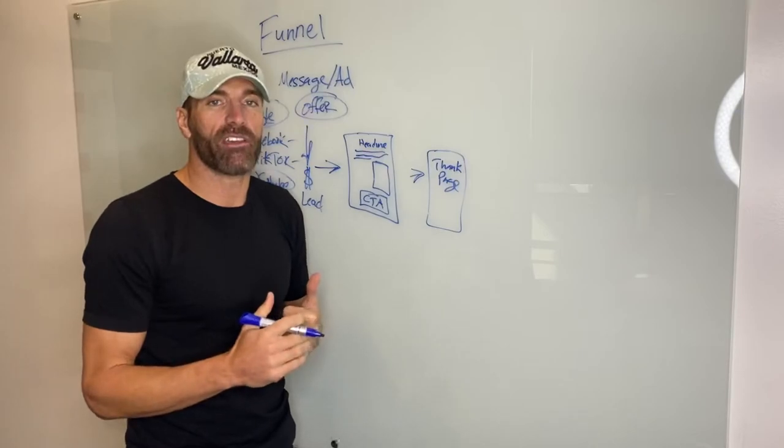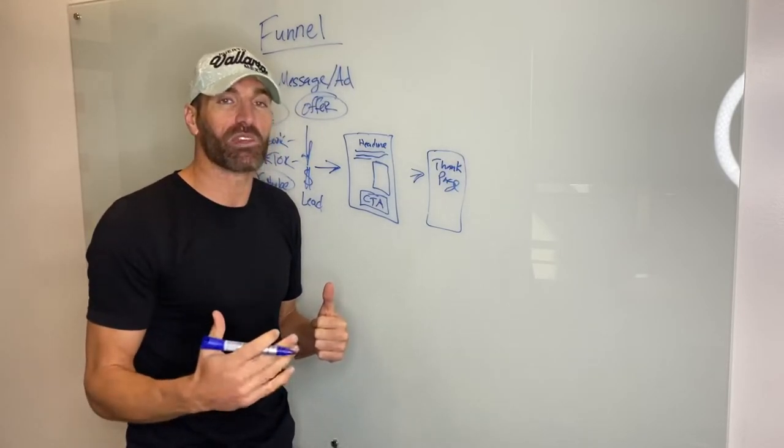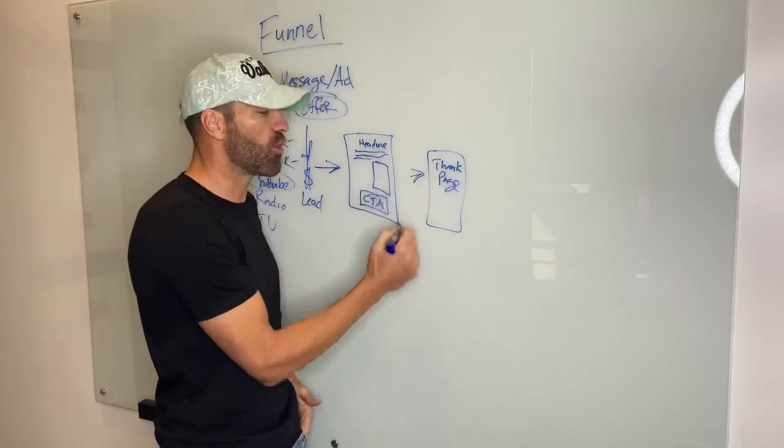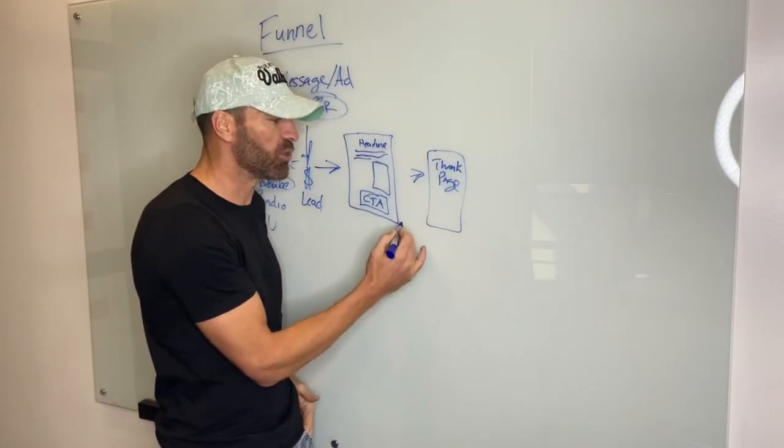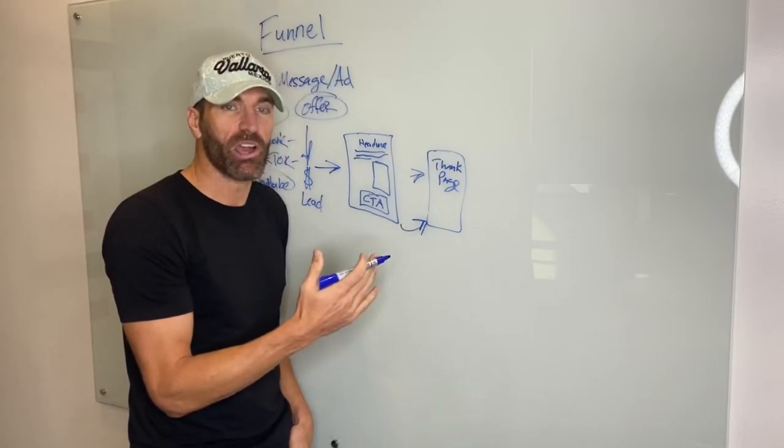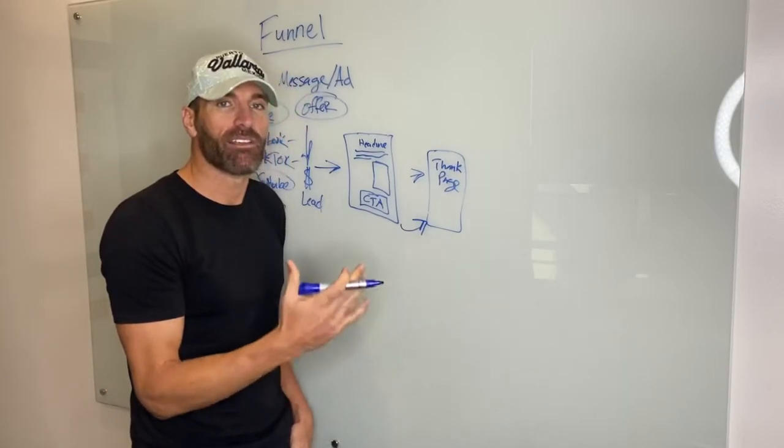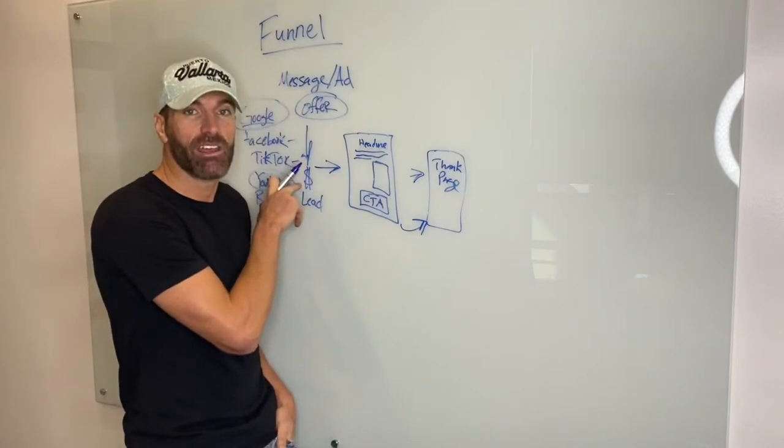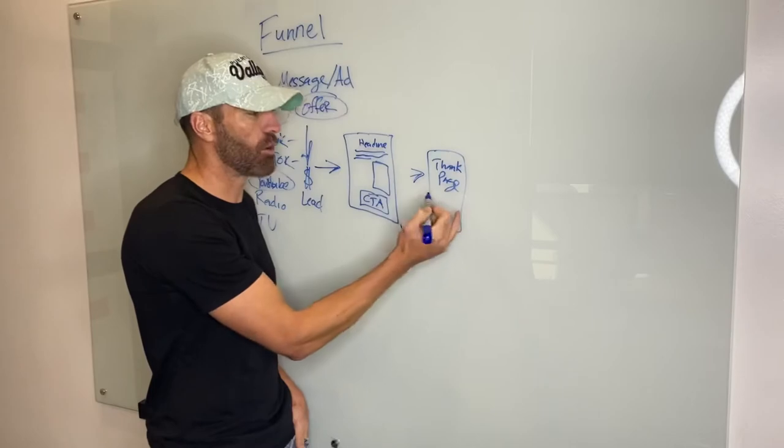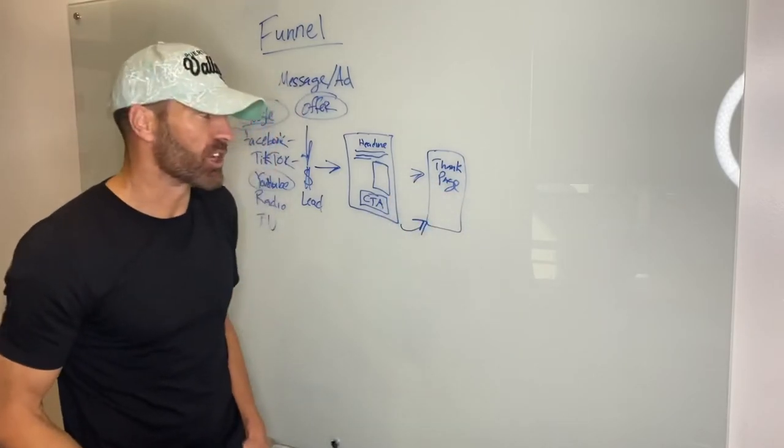You have to understand something about Facebook, about Google. All their AI systems are extremely complicated and are getting better and better. If you can show Facebook, Google, YouTube what a conversion is to you, they will start to optimize their ad delivery to get you maximum amount of conversions. So when somebody fills out a form or calls, that's considered a conversion.